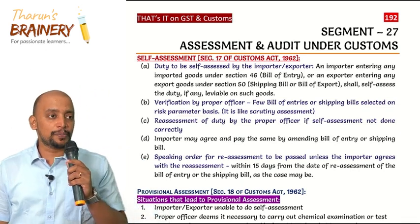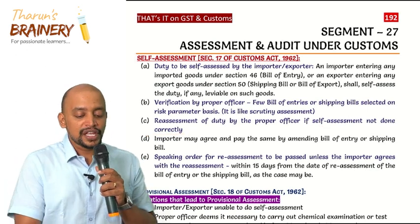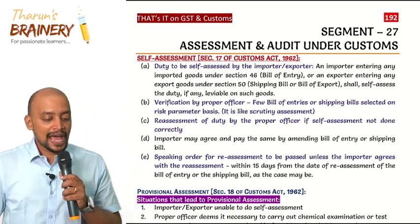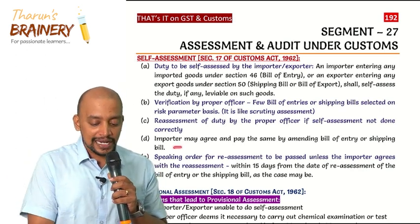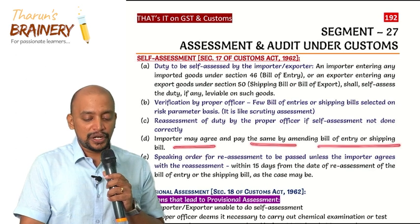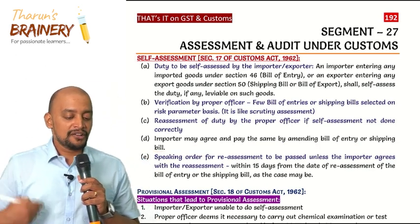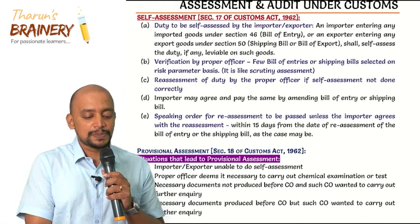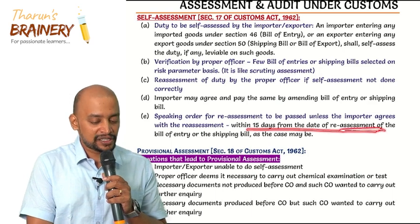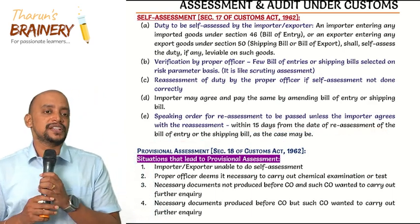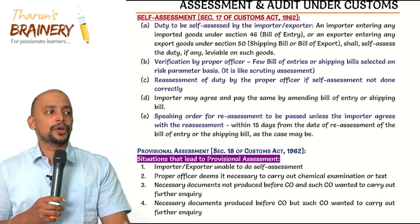If the proper officer is of the opinion that the self-assessment is not done correctly, they will do the reassessment of duty. The importer then has two options: either agree and pay the same by amending the bill of entry or shipping bill, or go for appeal. For appeal, the importer will ask the officer to pass a speaking order within 15 days from the date of reassessment, and on the basis of that speaking order he can go for appeal.